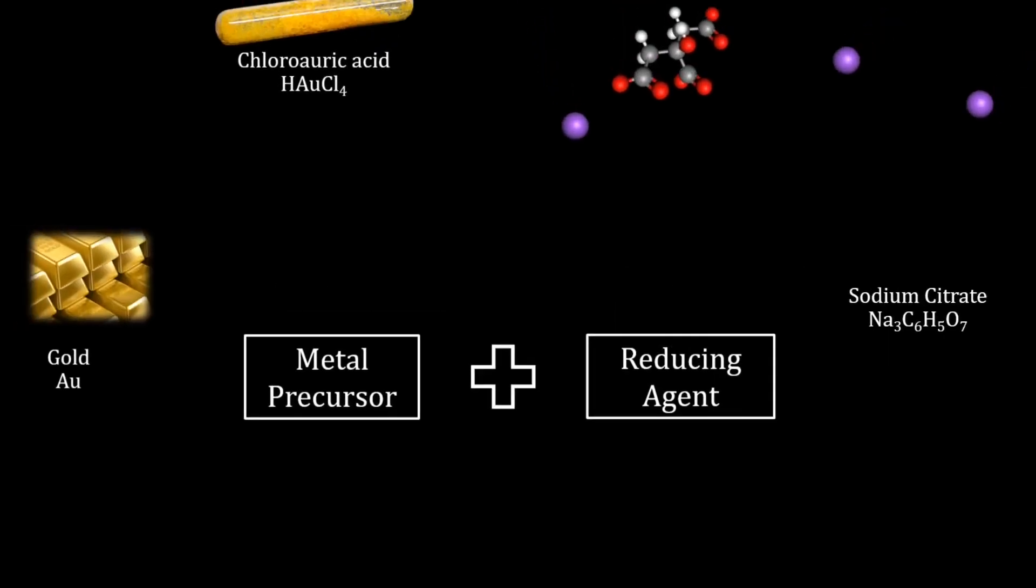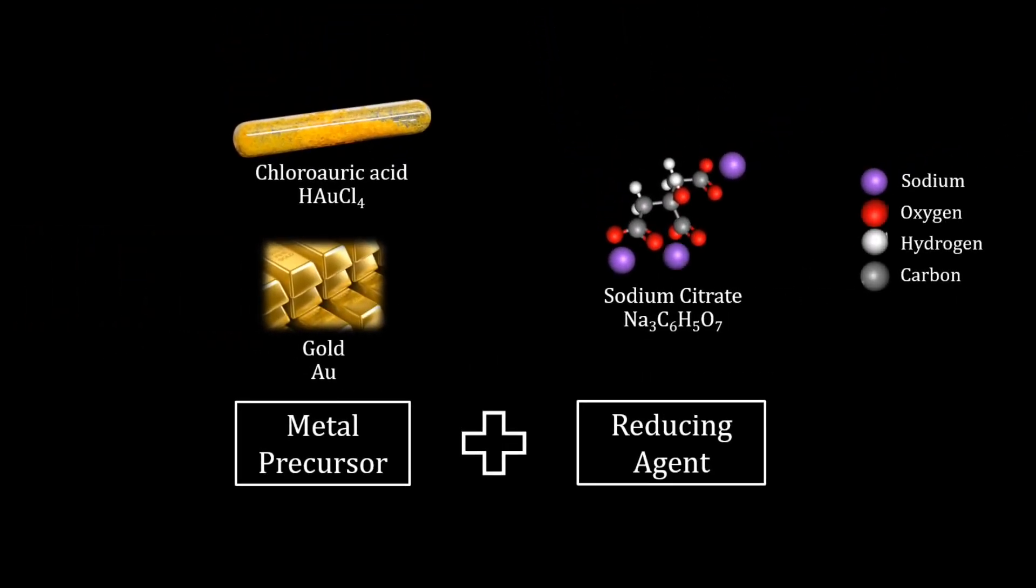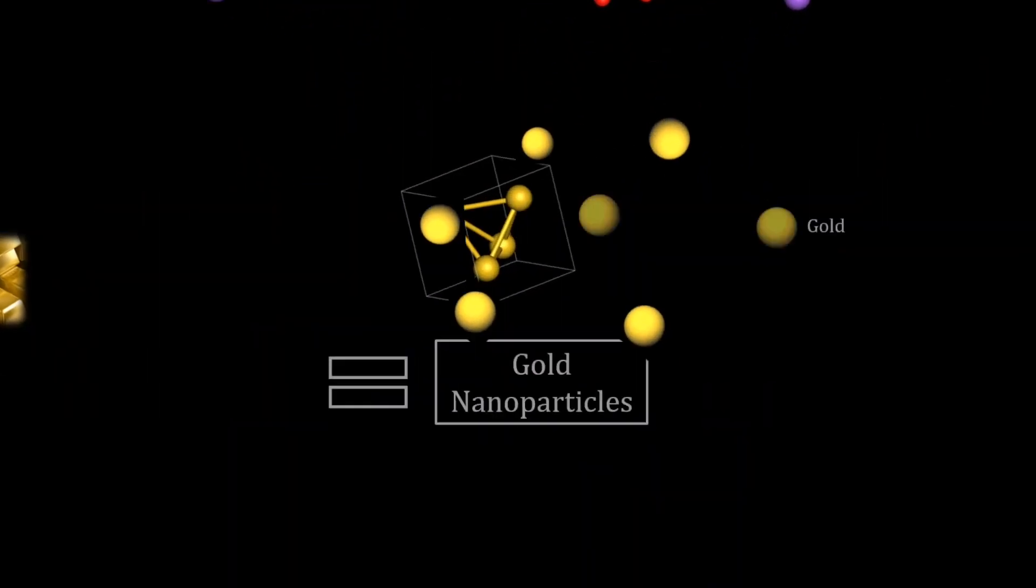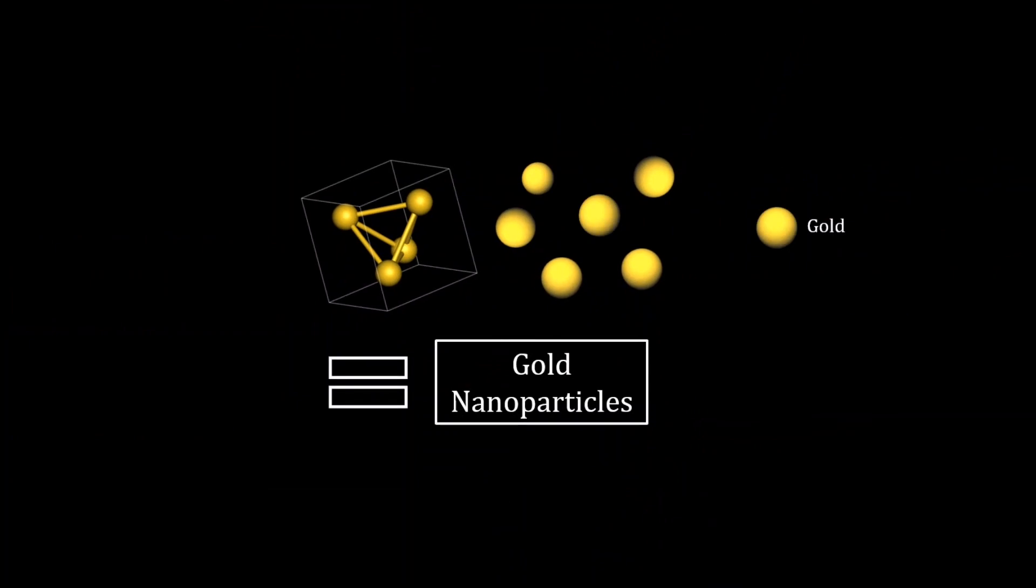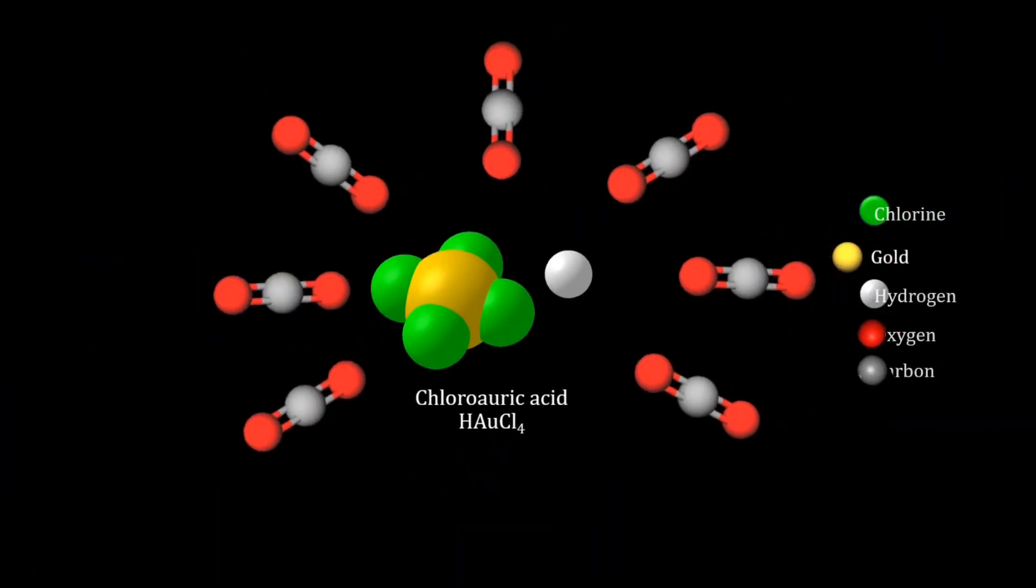Typical production methods involve a compound containing the metal you want to turn into a nanoparticle and reacting it with a reducing agent. Supercritical fluids and their unique temperature or pressure-dependent properties as a solvent enable more precise control over nanoparticle formation by influencing processes like nanoparticle nucleation.